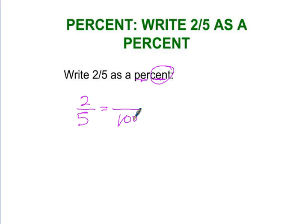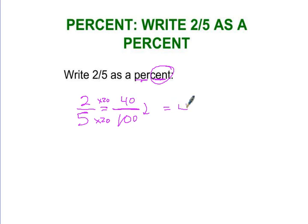So I'm going to change this into a fraction that is out of one hundred. Five times twenty is a hundred. Two times twenty is forty. Forty out of a hundred is the same thing as forty percent.